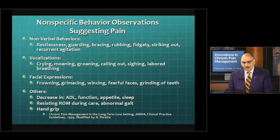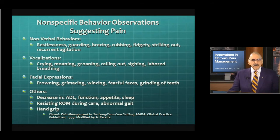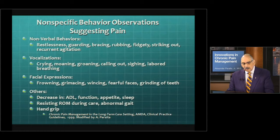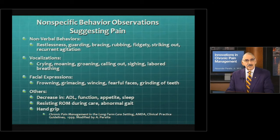So we look at these non-verbal behaviors like restlessness, guarding, rubbing, fidgeting, striking out, and recurrent agitation. We look at vocalization — crying, moaning, grinding of teeth, labored breathing. Facial expressions — grimacing, frowning, fearful faces. The way I manage this type of syndrome for people having nonspecific behaviors of pain is: if they have nonverbal behaviors of restlessness and guarding and rubbing — two of these — and two of the vocalization — moaning, groaning, labored breathing — or frowning, grimacing, fearful faces, they get three points for each one. So their pain rating is a nine out of 10 on a visual analog scale. Other things that may cause pain you can see in their behavior: decrease in activities of daily living, functioning, decreased appetite, not sleeping well, and resisting range of motion.